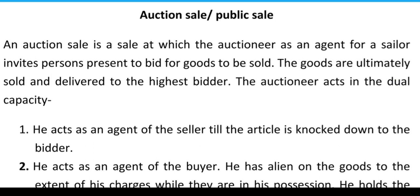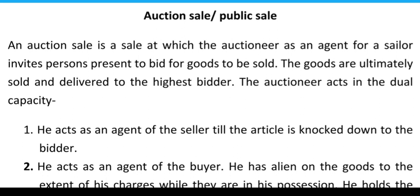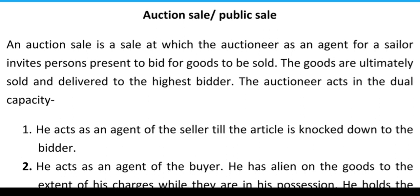Just like an ordinary sale, an auction sale also has a seller and a buyer. The difference is that in an auction there will be several prospective buyers called bidders. Among various bidders, the one who offers the highest price or bid will normally be the successful purchaser. The seller often places a minimum price, bidders compete among themselves, and the goods are ultimately sold to the highest bidder. The auctioneer who sells the goods by auction is an agent of the seller as well as agent of the buyer.